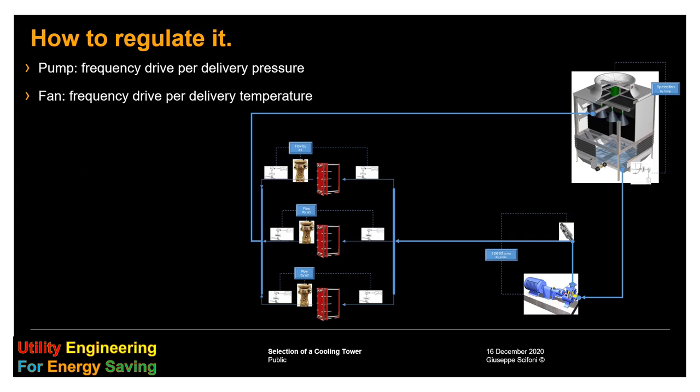A couple of words concerning the regulation. Actually, it depends upon the circuit. Let's take a very simple one, a single loop. Typically, the users are provided with flow control valves, like in this case, to keep constant flow rate across the heat exchanger. In this case, we need just to provide a constant pressure before the users, by means of the frequency drive of the pump.